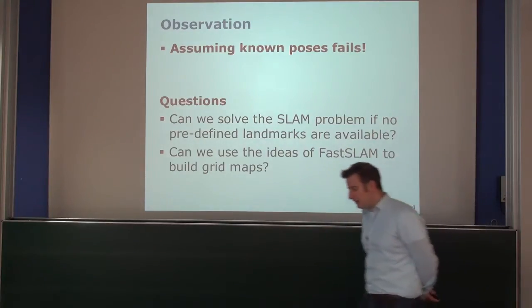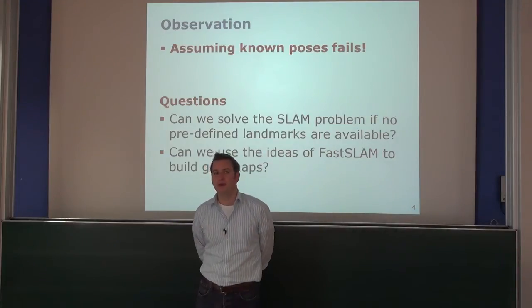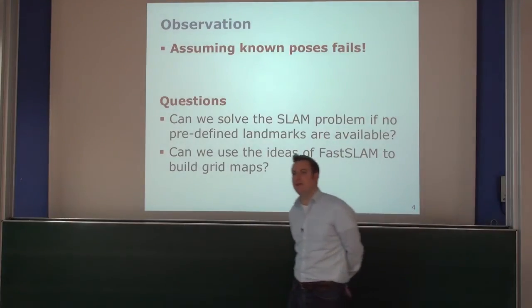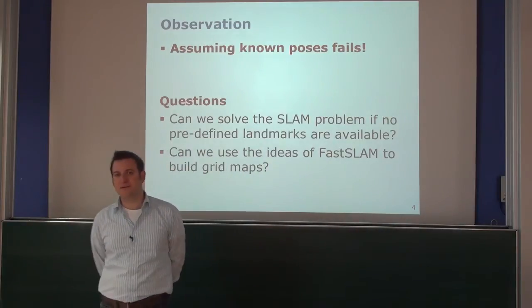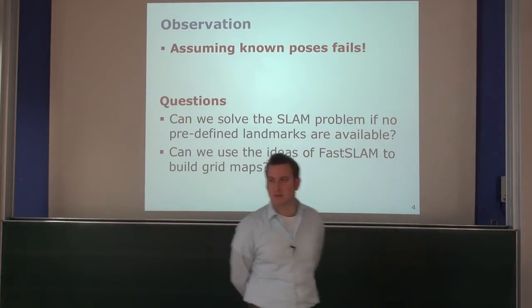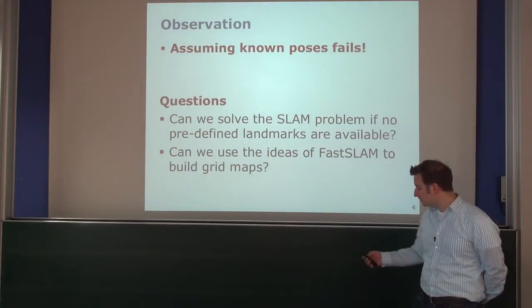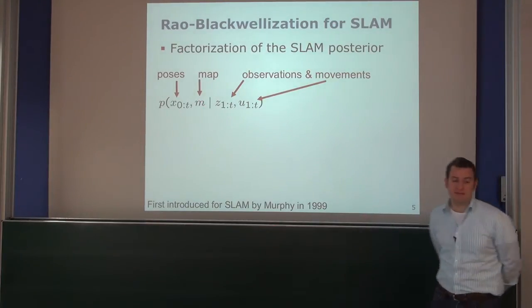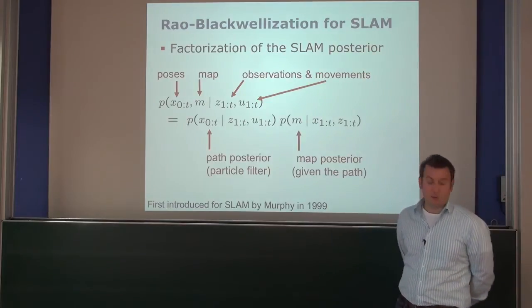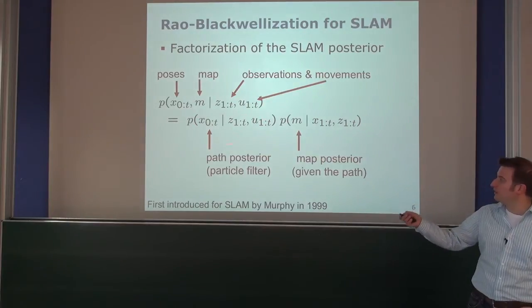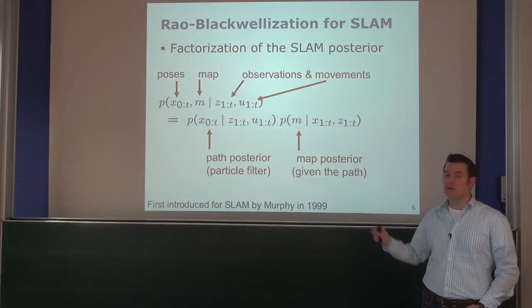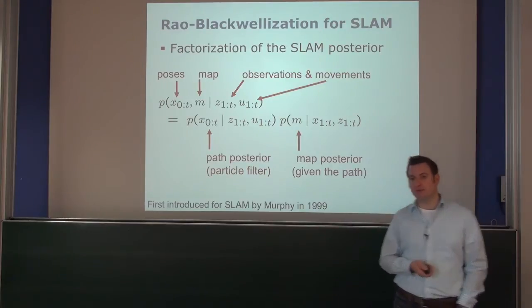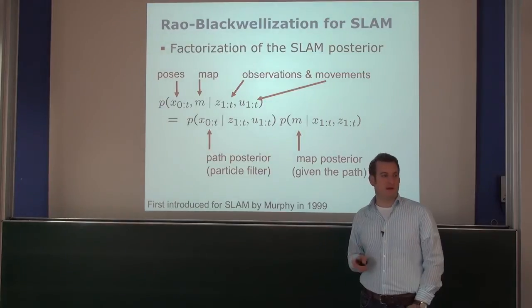The key idea today is: can we exploit the ideas from FastSLAM to build a grid-based variant? That means using the Rao-Blackwell factorization of our belief, splitting it into two parts — using a particle filter to estimate the pose, and then a per-particle map to estimate the map of the environment. We had our belief about the poses and the map given observations and controls, and we split that up: one posterior about the path the robot took, for which we use the particle filter exactly as in FastSLAM for landmarks.